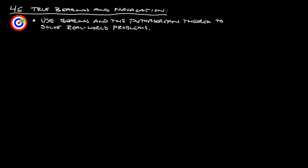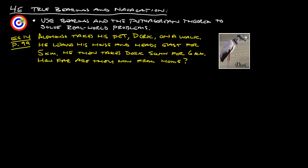Let's take a look at an example. This is example 14 from page 99. I've taken a little artistic license to change the examples a little bit. This one now says Alfonso takes his pet dork, and there's a picture of dork over there, on a walk. He leaves his house and heads east for five kilometers, and then he takes dork south for six kilometers. How far are they now from home?